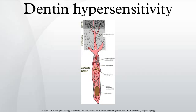Generally, treatments can be divided into in-office treatments and those which can be carried out at home, available over-the-counter or by prescription. OTC products are more suited for generalized, mild to moderate dentin hypersensitivity associated with several teeth, and in-office treatments for localized, severe dentin hypersensitivity associated with one or two teeth. Non-invasive, simple treatments which can be carried out at home should be attempted before in-office procedures. The purported mechanism of action is either occlusion of dentin tubules or desensitization of nerve fibers blocking neural transmission.